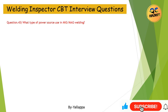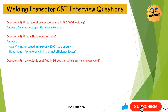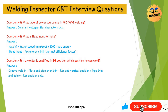Question 43: What type of power source is used in MIG/MAG welding? Answer: Constant voltage, flat characteristics. Question 44: What is the heat input formula? Answer: Arc Energy = (Voltage × Amperage) / Travel Speed × 1000; Heat Input = Arc Energy × 0.8. Question 45: If a welder is qualified in 3G position, which positions can he weld? Answer: Groove weld in plate and pipe over 24 inches — flat and vertical positions. Pipe 24 inches and below — flat position only. Fillet weld in pipe and plate — flat, horizontal, and vertical positions.